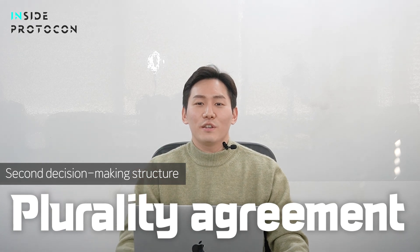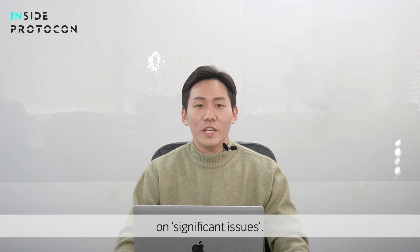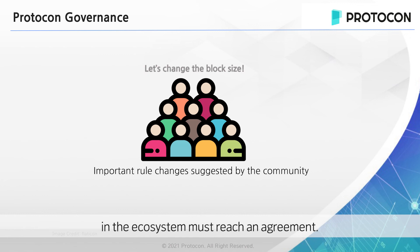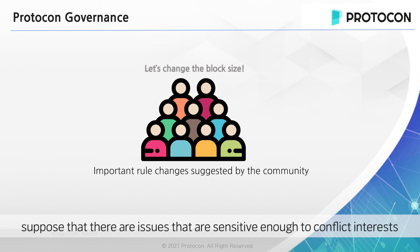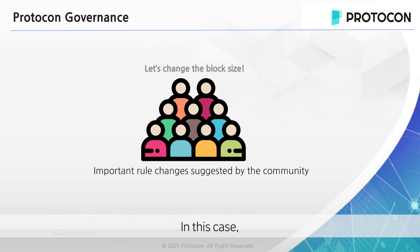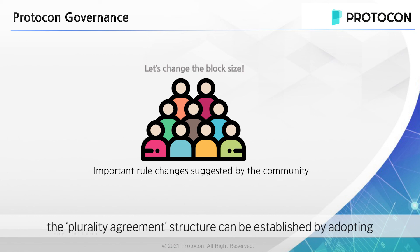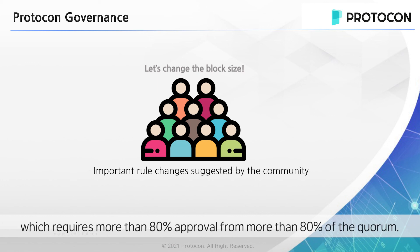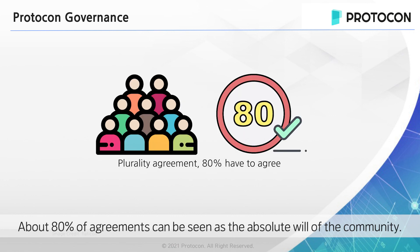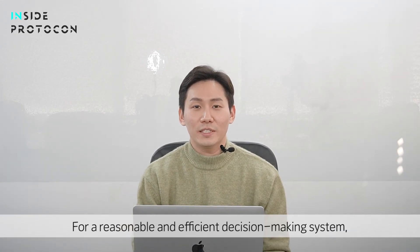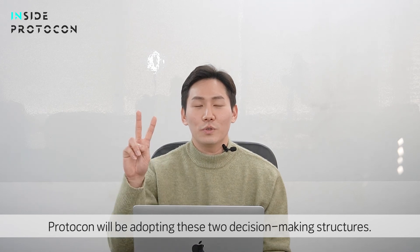The second is decision-making through plurality agreements on significant issues. Decision-making and changes that are important enough to have a big or small impact on everyone in the ecosystem must reach an agreement. For example, suppose there are issues sensitive enough to conflict interests, such as changing the block size. In this case, the plurality agreement structure can be established by adopting Tezos's consensus structure, which requires more than 80% approval from more than 80% of quorum. About 80% agreement can be seen as an absolute will of the community. For reasonable and efficient decision-making, Protocon will be adopting these two decision-making structures.